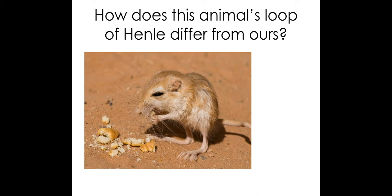A popular exam question asks why some animals' loops of Henle differ from ours. For example, a desert mouse has a much longer loop of Henle than humans. The reason is that it needs to create a much steeper water potential gradient, so that the mouse can reabsorb as much water as possible by generating a very low water potential in the medulla tissue.